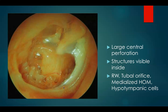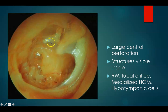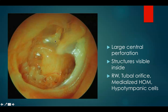This is the right ear. You can see the handle of malleus. It is a large central perforation with the handle of malleus medialized. Through the perforation you can visualize the hypotympanic cells, Jacobson's nerve, and the promontory. You can also make out that the remnant of the drum is retracted and almost draping over the incus. This is your tubal orifice.